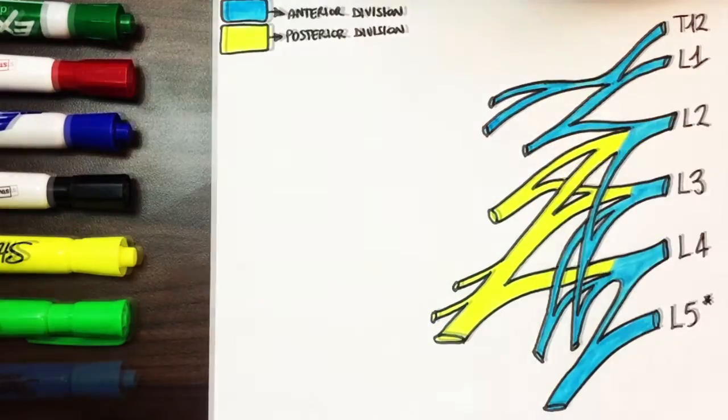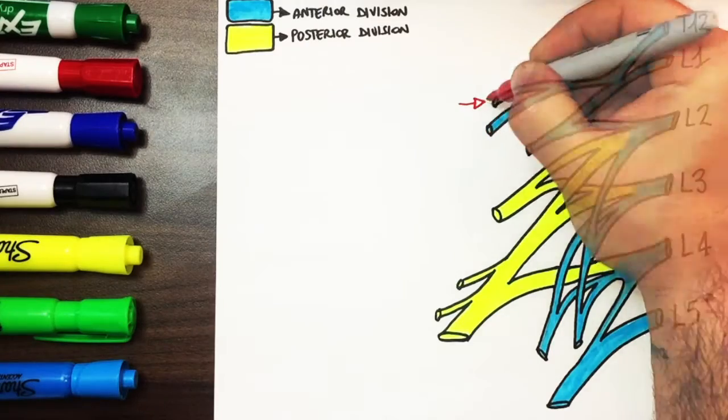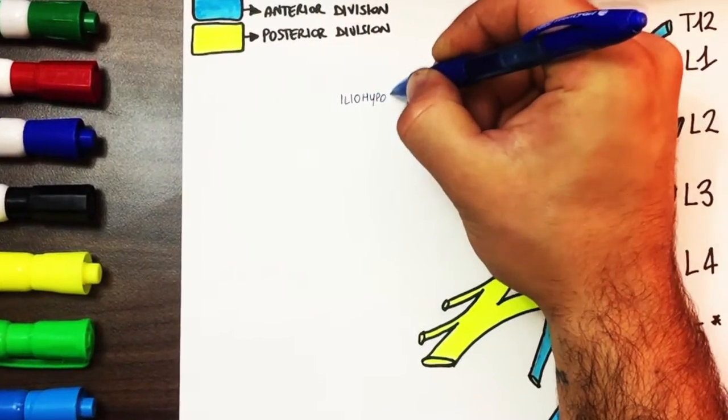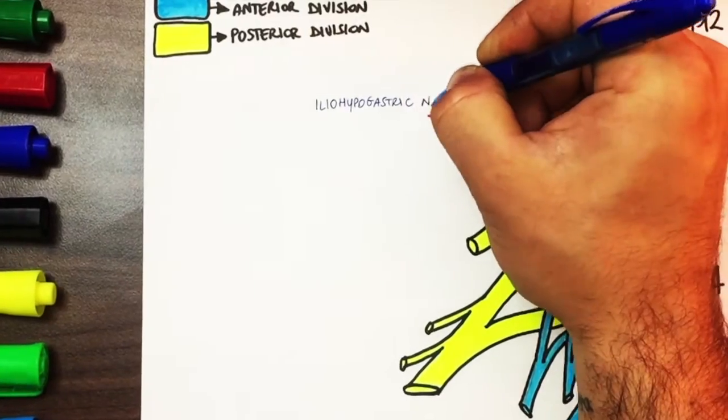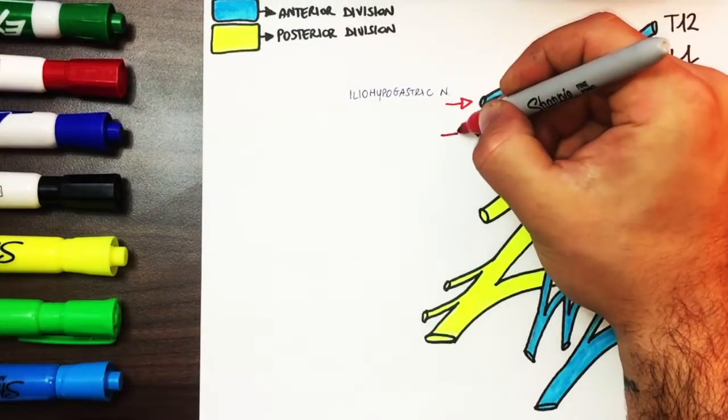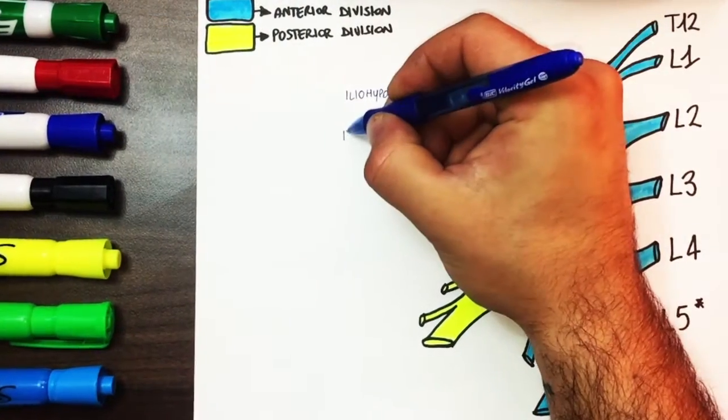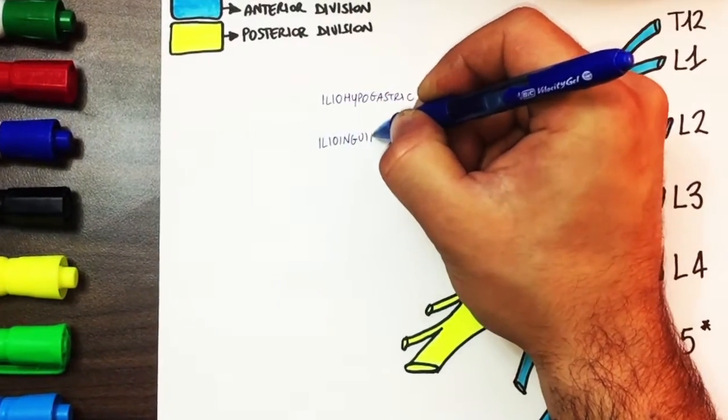Now that the diagram is completed let's start to give names. From L1 with a contribution from T12 we have the iliohypogastric nerve which is the superior branch of the anterior ramus and the ilioinguinal nerve which is the inferior branch.